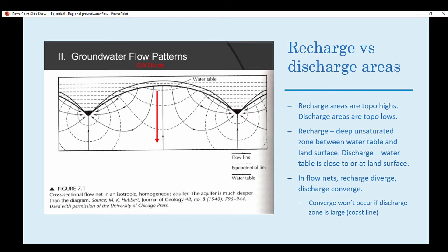Recharge involves a deep unsaturated zone between the water table and the land surface. Discharge occurs when the water table is close to the land surface, so you'll have more discharge occurring due to evaporation. Or it's closer to the surface, so if you have a change in topography, you can have a spring form.